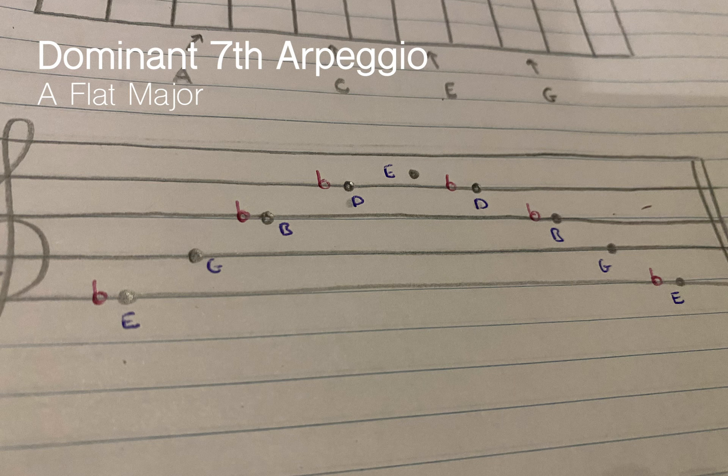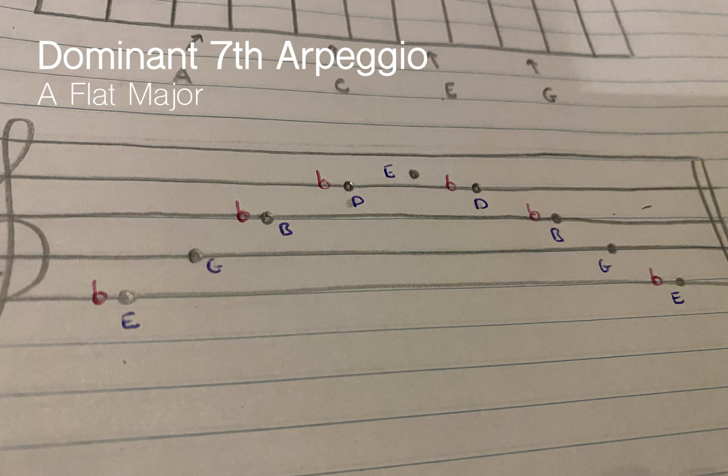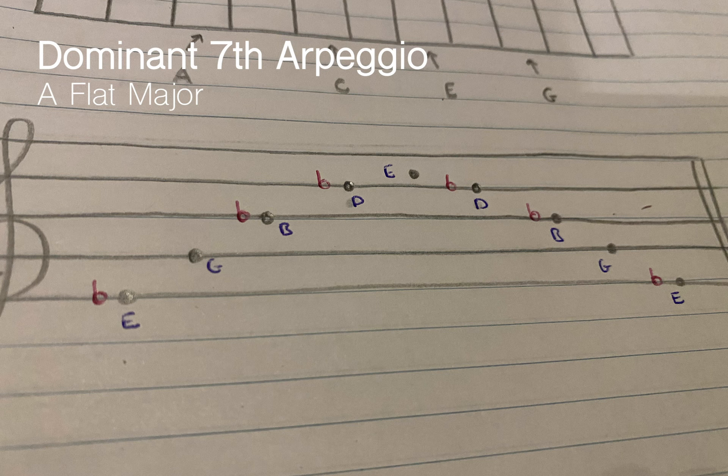The fingering for the scale will be for the first note, E flat, it will be number two on your right hand part, because we are working from the treble clef line. First finger on G, second finger on B flat, third on D flat, and fourth on E flat. And then repeat back down: third on D flat, second on B flat, first on G, and then second on E flat.